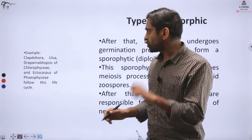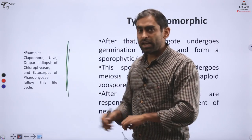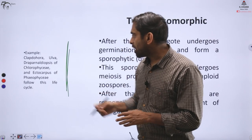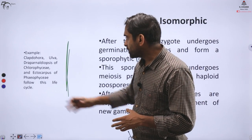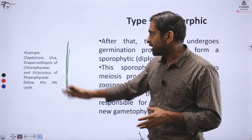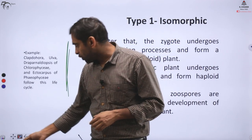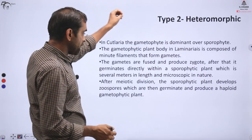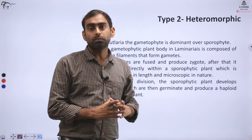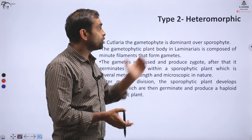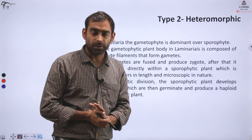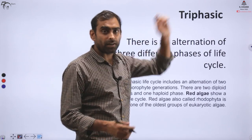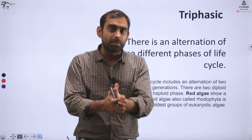When haploid and diploid both types of organisms exist in the life cycle, either they are the same or they are different types. Some common examples if you want to notice: isomorphic ones - you have Ulva and so many examples from Chlorophyceae. Ectocarpus, an example from Phaeophyceae, follows this type of life cycle. And if we talk about heteromorphic type of life cycles, then there are some examples from Phaeophyceae that follow heteromorphic life cycle.